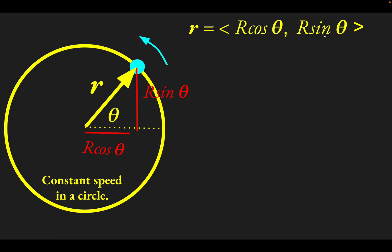The magnitude of this position vector is just the radius of the circle. You can verify this with the Pythagorean theorem: take the square root of the x-component squared plus the y-component squared. Since cosine squared plus sine squared equals one, the magnitude of the vector is simply the radius r.